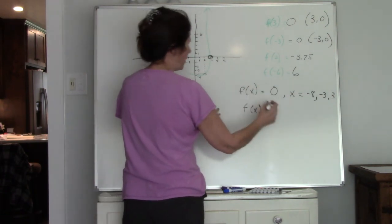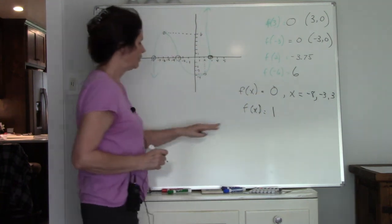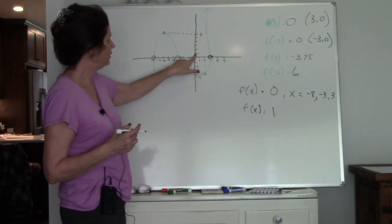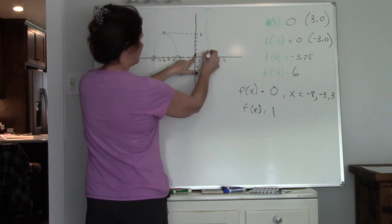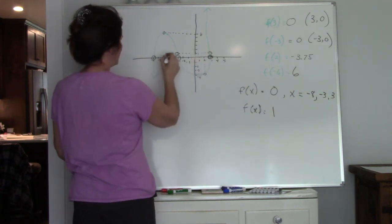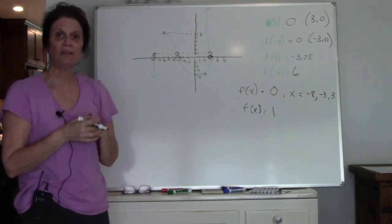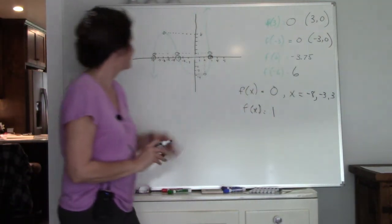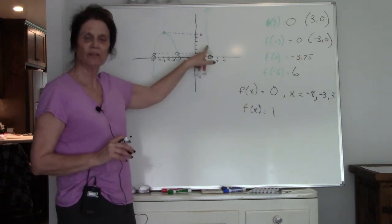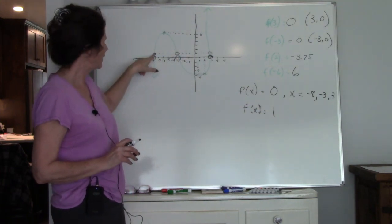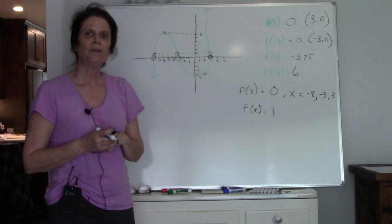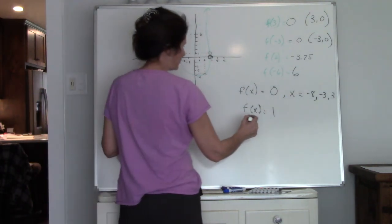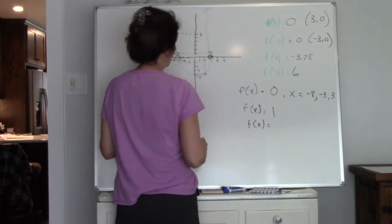Now let's say when f of x equals 1 — meaning when y is 1 — what are my x values? Coming up to y equals 1 on the graph and tracking across, I have an x value here, an x value here, and an x value here — three different places. It's not going to be exact, but they'll be close to 3, negative 3, and negative 8, just shifted a little bit. Make sure you look across the entire graph.